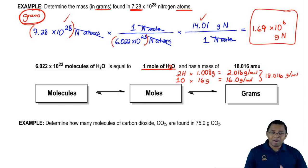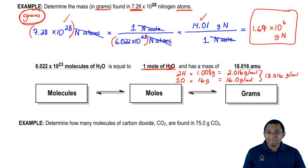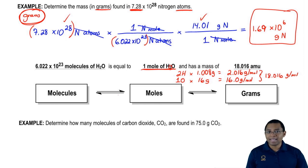So remember, Avogadro's number is always equal to one mole of whatever we're talking about. One mole of anything is just equal to the total mass of that object.